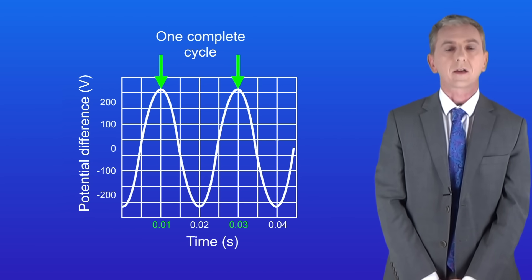If we look at the trace we can see that the first peak happened at 0.01 seconds and the next peak happened at 0.03 seconds. So the time between these peaks is 0.02 seconds and that's how long it takes for the current to change direction and then change back again.